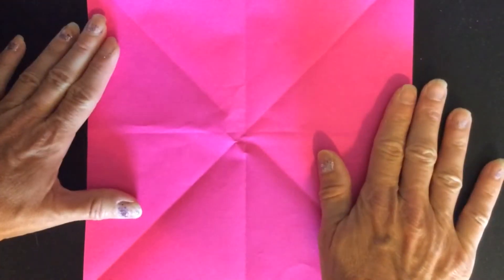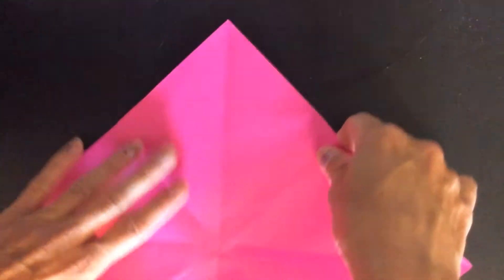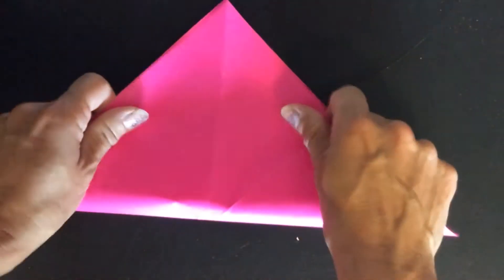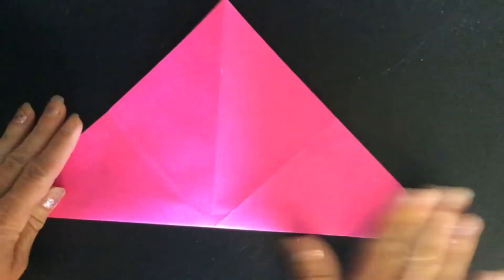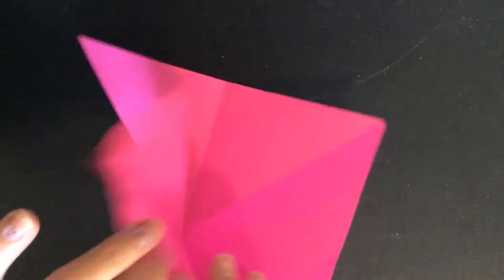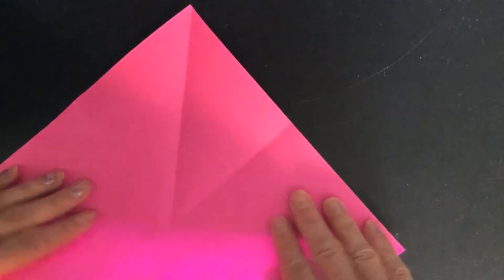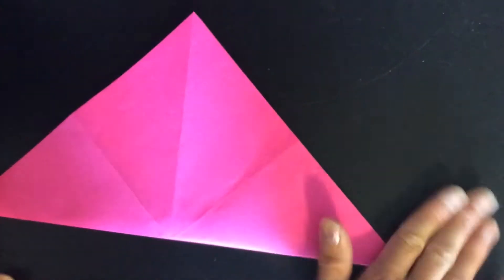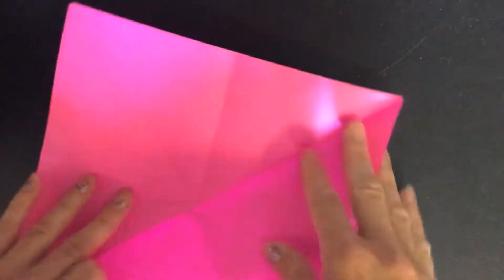You take a square piece of paper and first you fold one point toward the other point. Make a crease and turn it around and do the same thing on the other side. One point toward the other point and fold.